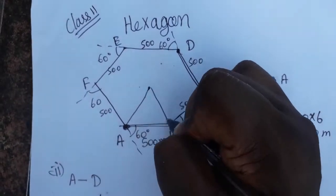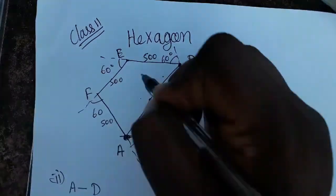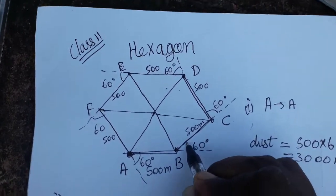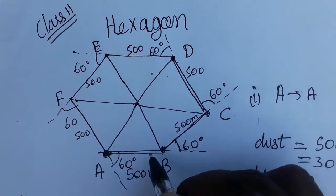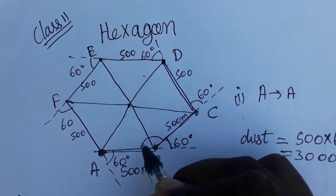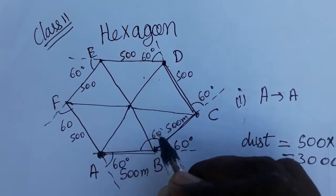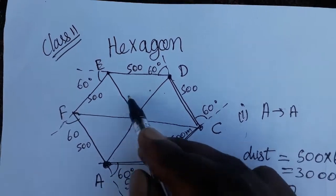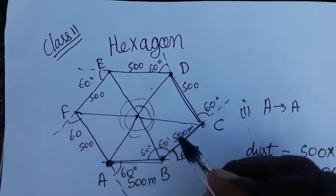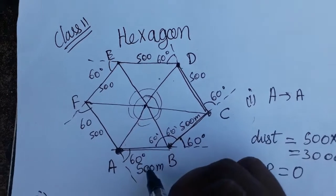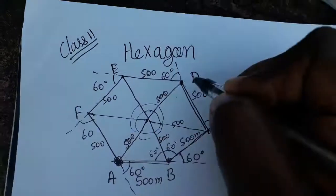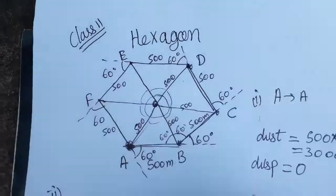From the center of the hexagon, I draw triangles. Each triangle is equilateral because the central angles are each 60 degrees — one straight line is 180 degrees, so 180 minus 60 gives 120, and the remaining angles are each 60 degrees. Since all six central angles are 60 degrees and the total is 360 degrees, all triangles are equilateral. Therefore all sides are 500 meters.